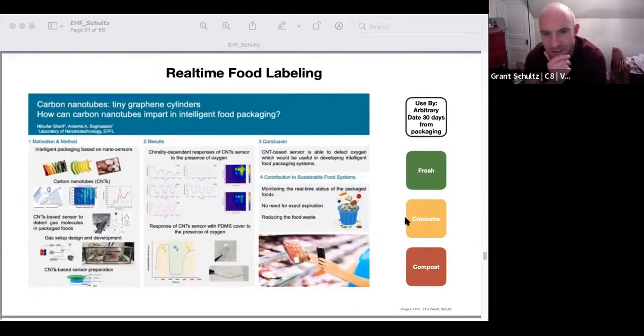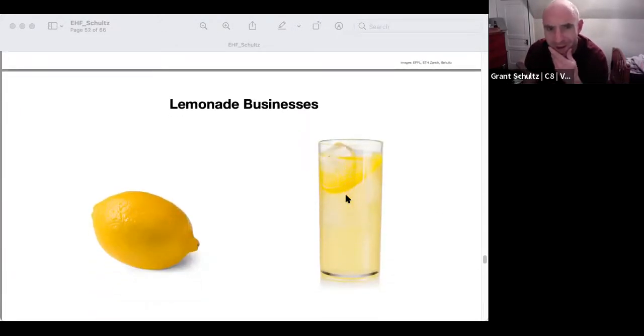Real-time food labeling is another opportunity for marketing. Some Swiss researchers identified carbon nanotubes that could effectively be tied to chroma indicators. So rather than have an arbitrary spoilage date on a package of food, 30 days from X, it can be tied to the true oxidative sense inside that package. You could reduce food waste for one, but also increase consumer trust that when they take home a package of meats or a gallon of milk, it's truly going to be fresh and not just spoiled early or affected otherwise. Marketing opportunity.